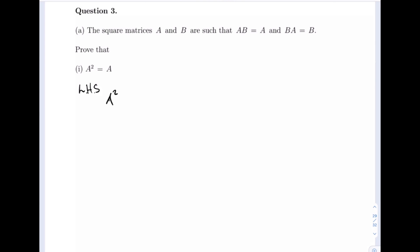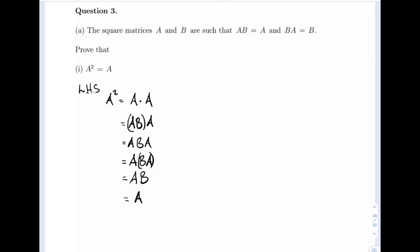A squared is equal to A times A. Now I'm going to take the AB expression given to us and replace one of these A's, so that now what I have is AB times A, which I can regroup as A times BA. But we know that BA is equal to B, so now we can say that this is A times B.